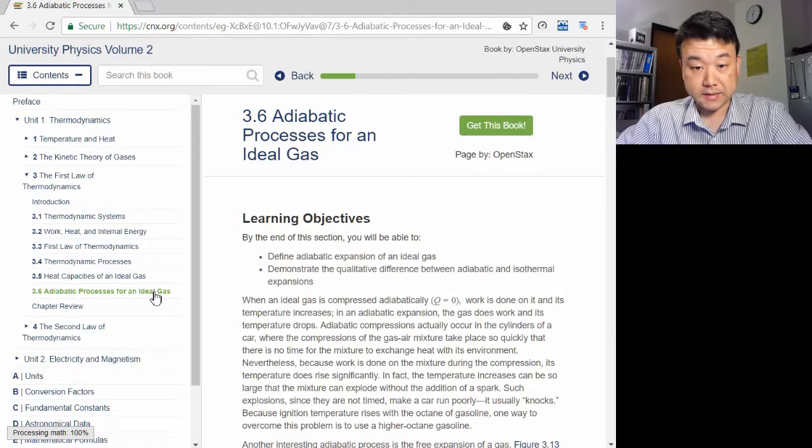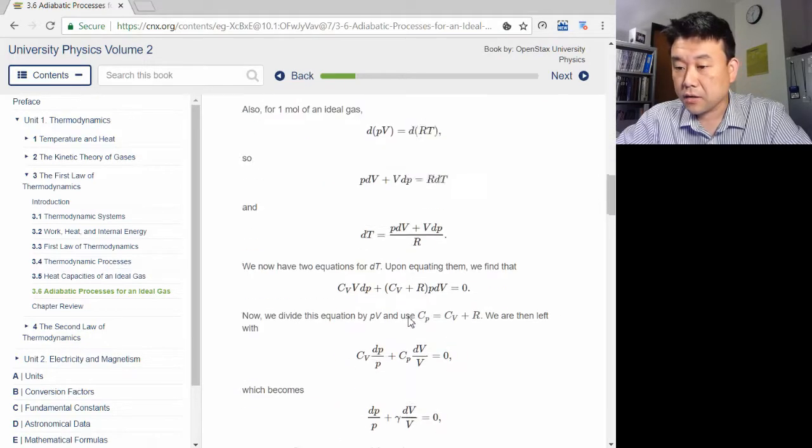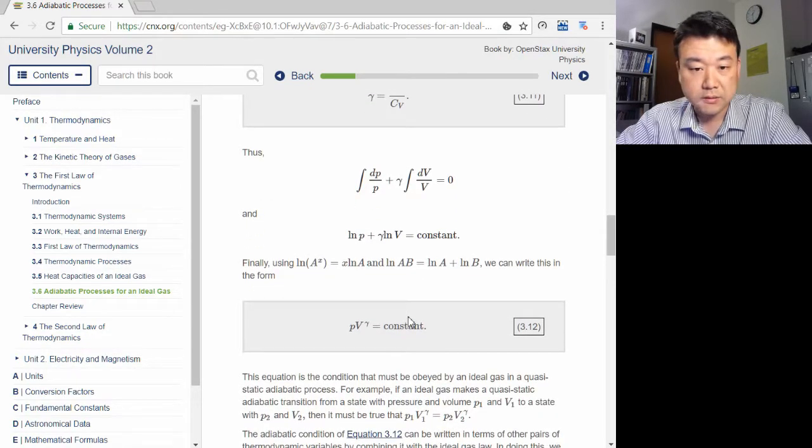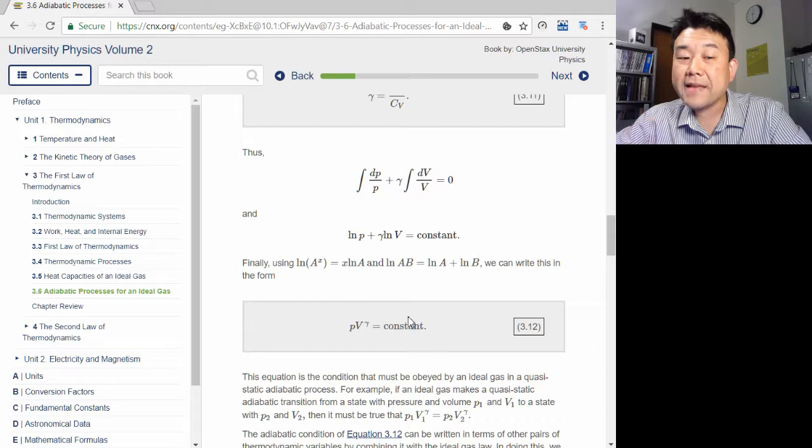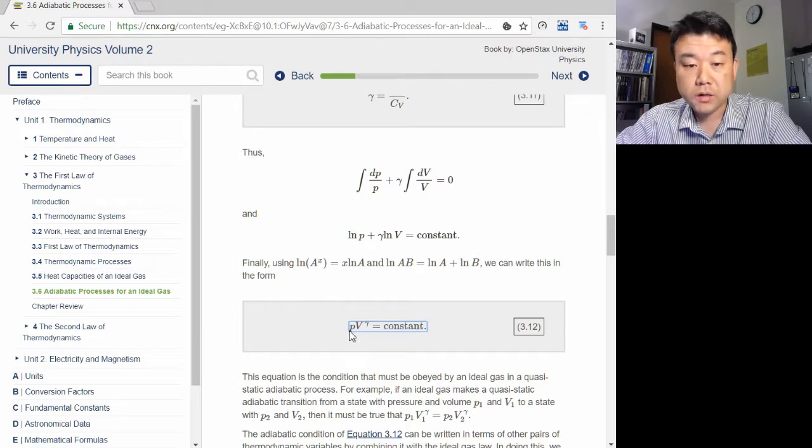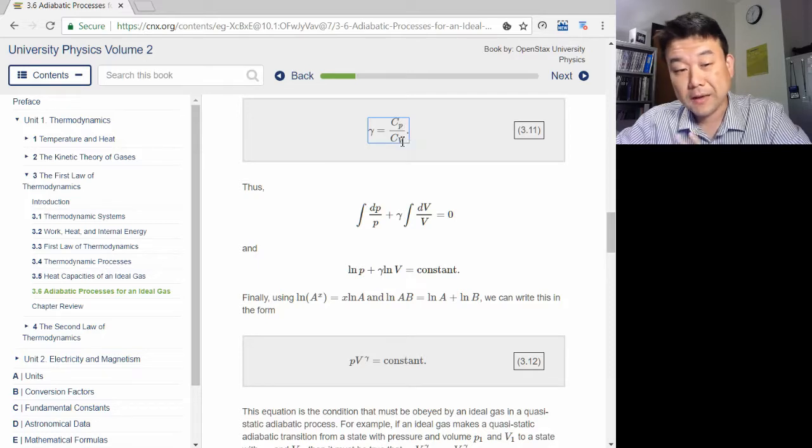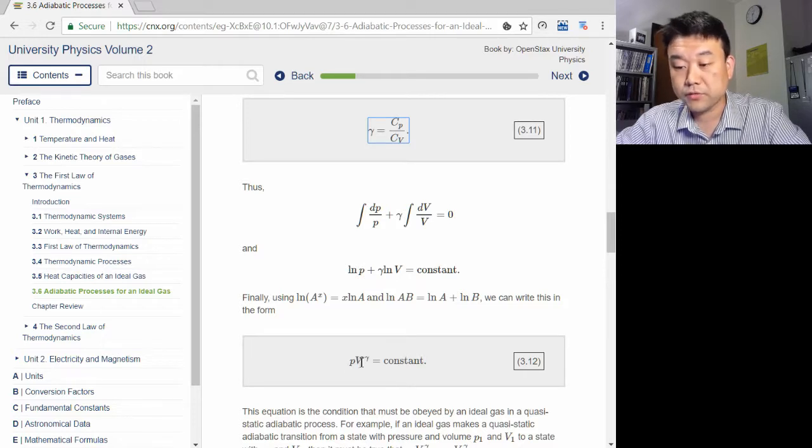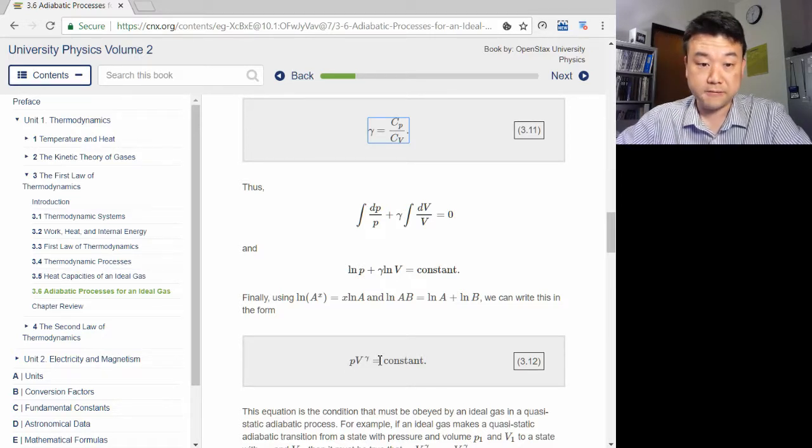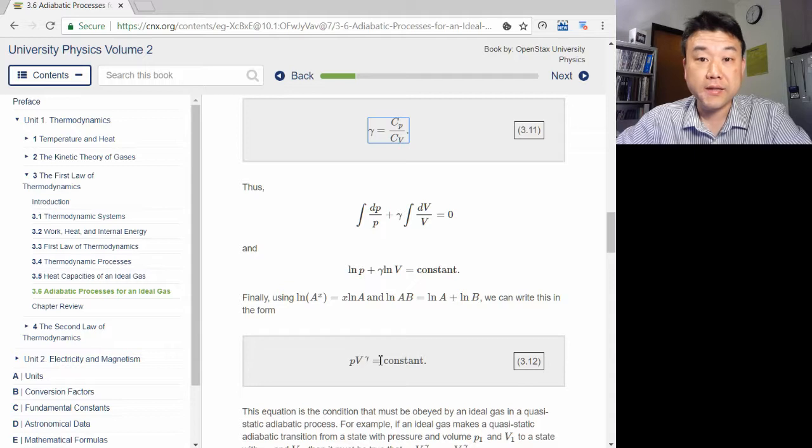Section 3.6 also derives the adiabatic relationship, which says that instead of pressure times volume being constant, that's the ideal gas law if you had an isothermal process, in an adiabatic relationship, it's pressure times volume raised to gamma. Gamma is the ratio of the specific heat capacity under constant pressure, over specific heat capacity under constant volume, so it's this pressure times volume raised to this factor gamma that remains constant. This will be a useful relationship to know when we are later working out heat engine cycles.